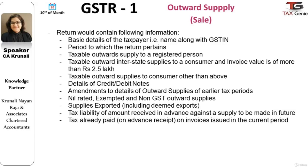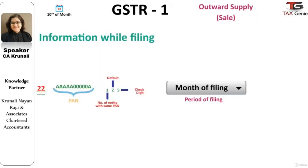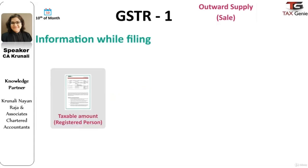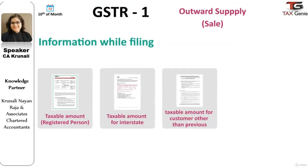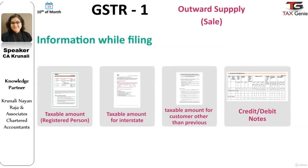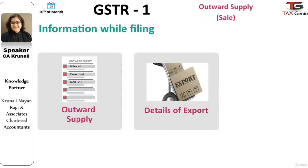GST Return 1 will contain the following basic information: basic details of the taxpayer along with name and GSTIN number, details of the period to which the return pertains, details of taxable outward supply to a registered person, taxable outward interstate supplies to a consumer with invoice value of more than 2.5 lakh, details of taxable outward supplies to consumers other than the cases mentioned above, and details of debit and credit notes. It would also include details of amendments of outward supplies pertaining to earlier tax periods.